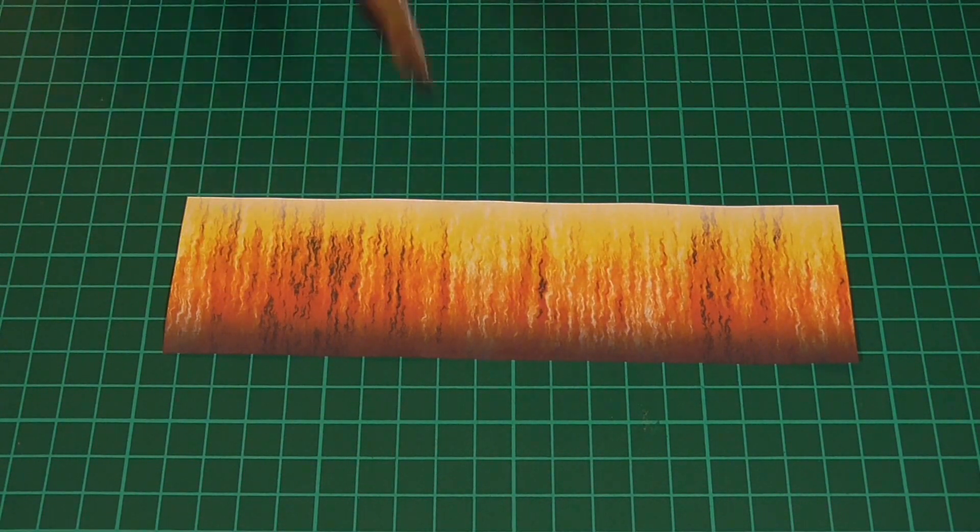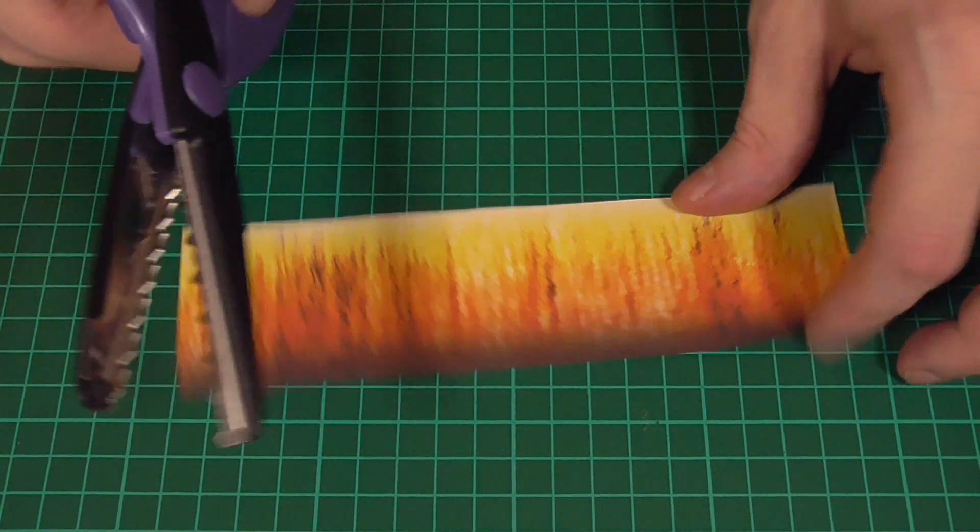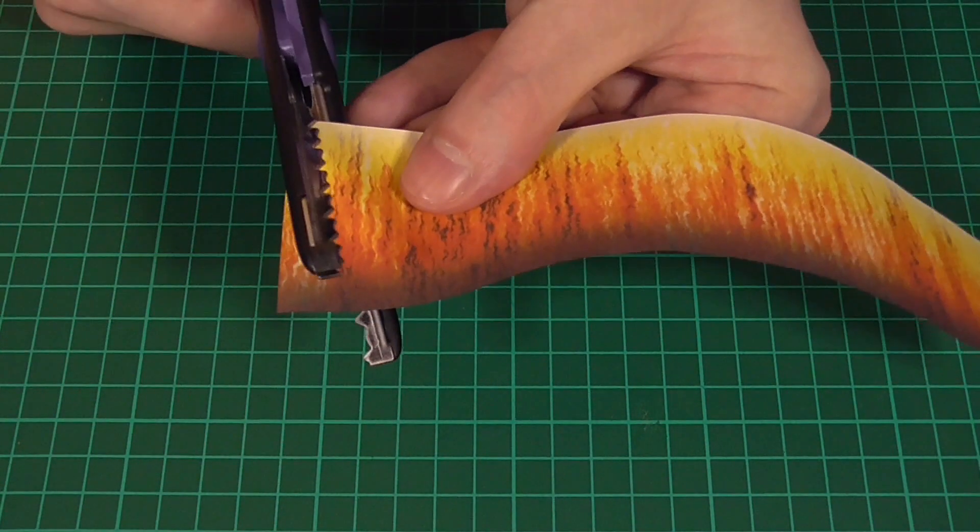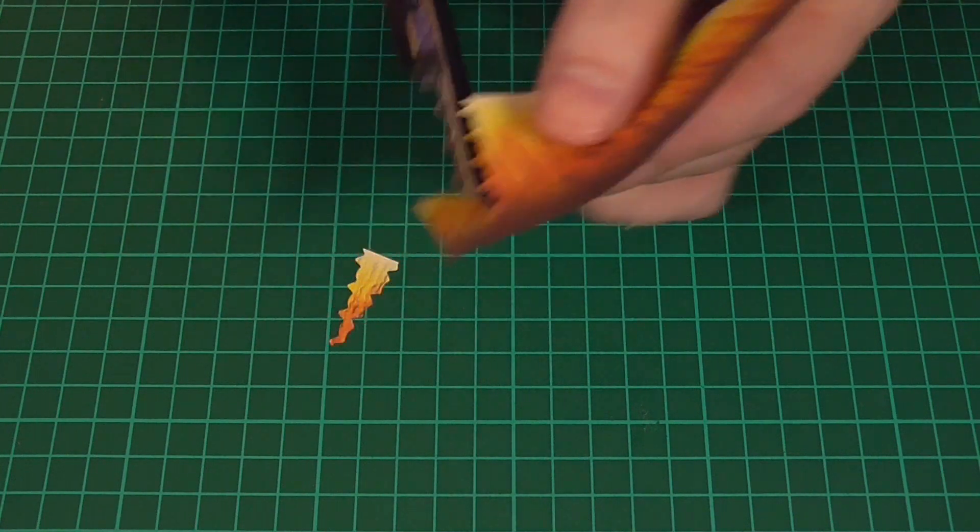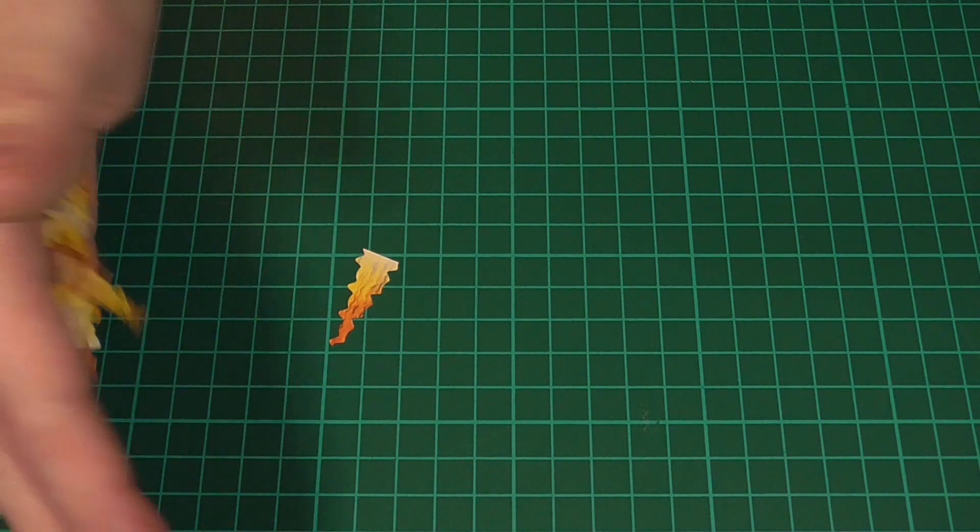Then I like to take those wavy decorative scissors, and using those I'll cut out a long triangular shape from the fire pattern. We can then go ahead and make a whole bunch of these in various sizes.